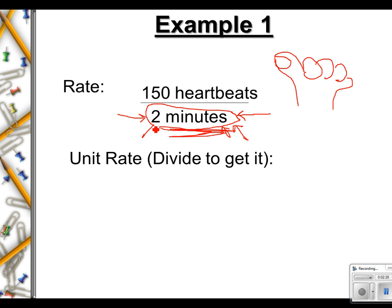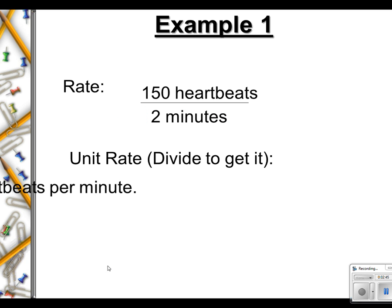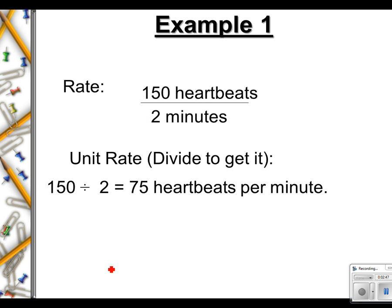So 150 divided by 2, pretty simple. 75 heartbeats per minute. Very important. Make sure you label your answers when you write them down. Don't just write 75, I'm done. All right, next problem.